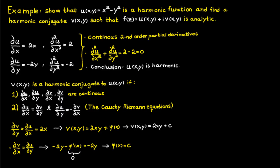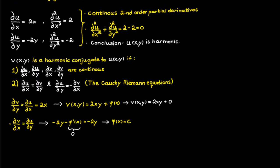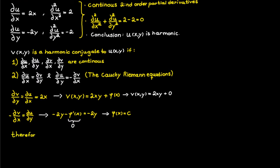Therefore we conclude that v is equal to 2xy plus some constant. This means there are infinitely many functions that can be a harmonic conjugate to u. For simplicity we let the constant equal zero, so since v is a harmonic conjugate to u, the function f equals x squared minus y squared plus i times 2xy is analytic.